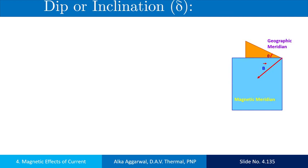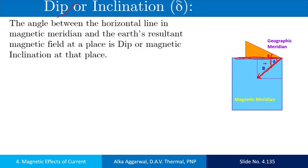Next is dip, or the angle of inclination, or magnetic inclination. This is the angle between the direction of the resultant intensity of the earth's magnetic field and the horizontal line in the magnetic meridian. The angle between the horizontal line in the magnetic meridian and the earth's resultant magnetic field at a place is called dip angle or angle of inclination.